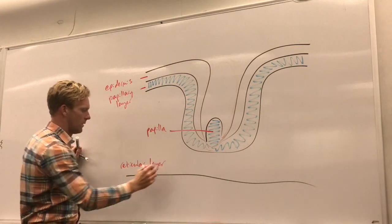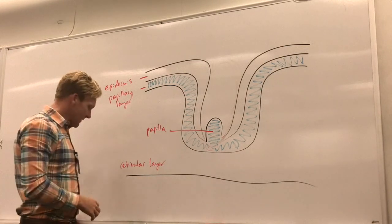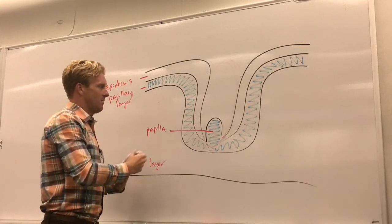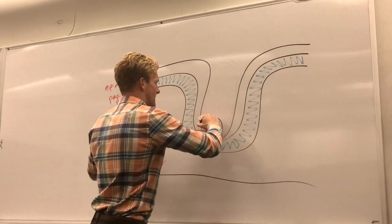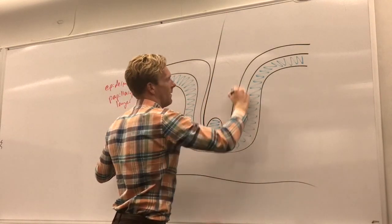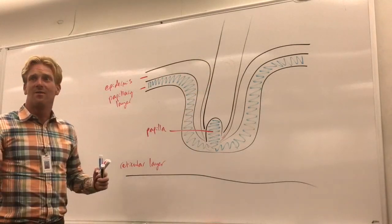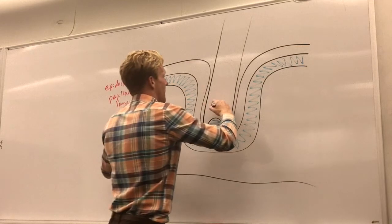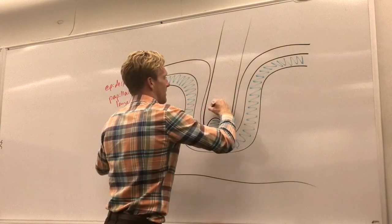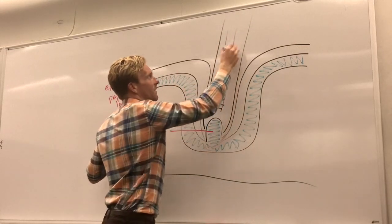Now the hair strand itself—we can draw this guy in purple. Let me outline it in black first. The hair strand itself is obviously going to extend outwards from the hair follicle like that, and the hair strand is going to consist of three different regions. The innermost region of the hair strand is going to be called the hair medulla.